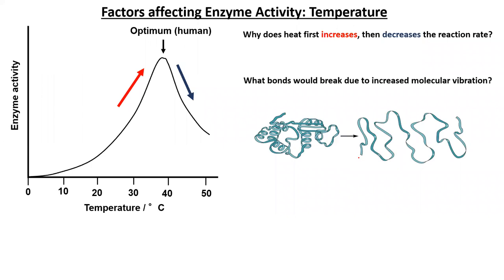If we look at temperature first, here we have a graph showing that as temperature increases, the enzymatic activity will increase up to a certain point. Here we're looking at the curve for humans, and if we were to see where the optimum is, it's around 37 degrees. We see that as the temperature increases up to that point, the chemical reactions or the enzymatic activity is favored. But then as the temperature increases further, at some point, the enzymatic activity decreases quite a bit.